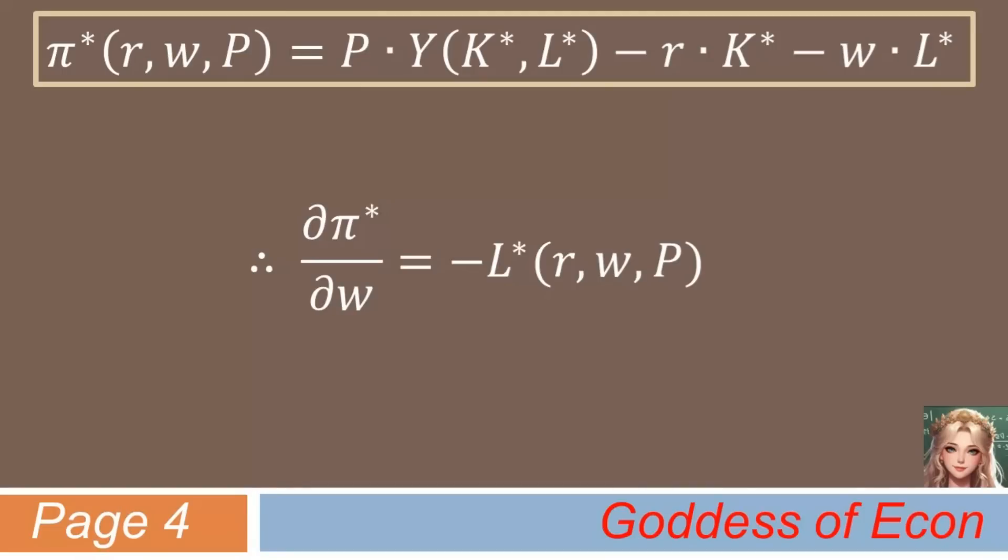Okay, now we are left with only one more exercise to do. Do you see what that would be? Well, we have dealt with r and w so far. This time, let's differentiate the profit function with respect to the output price, p.